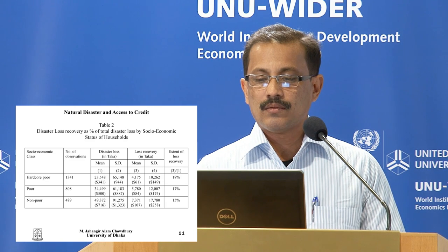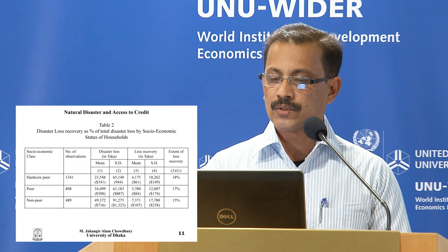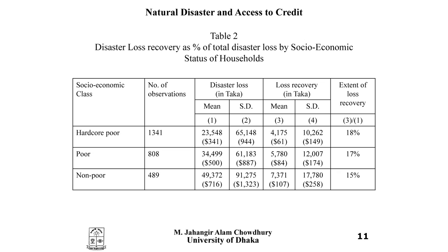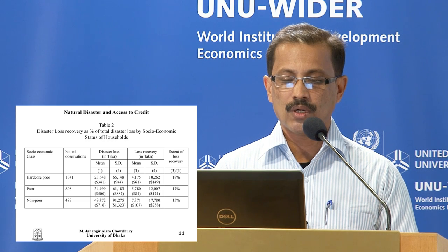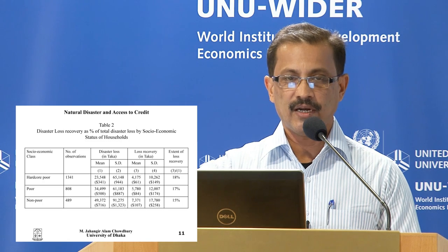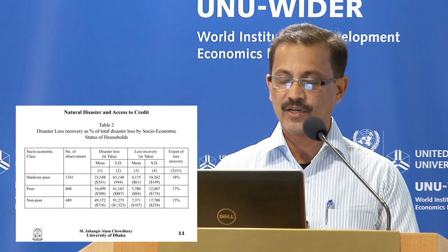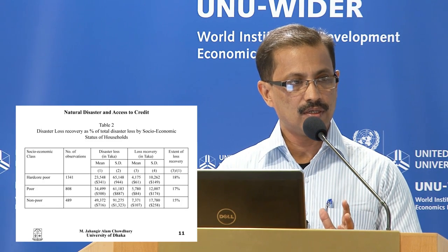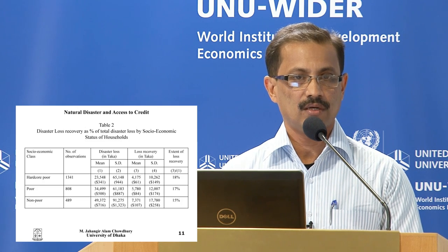In terms of loss recovery relative to total loss: for hardcore poor households, average recovery was 4,175 taka — about 18% of total losses. For poor households it was 17%, and for non-poor 15%. So even from a recovery perspective, hardcore poor households were not in a better position — they lost a significant share of their non-land assets and could not recover those losses through any means.